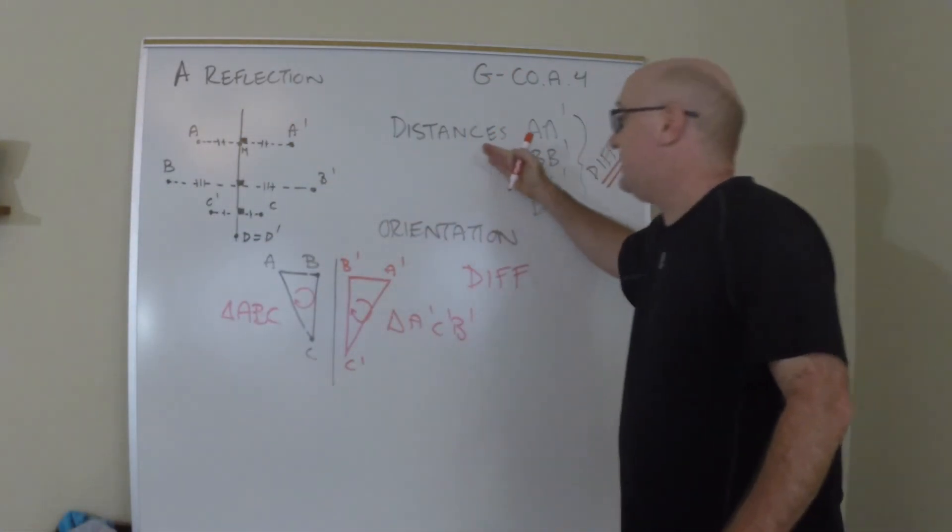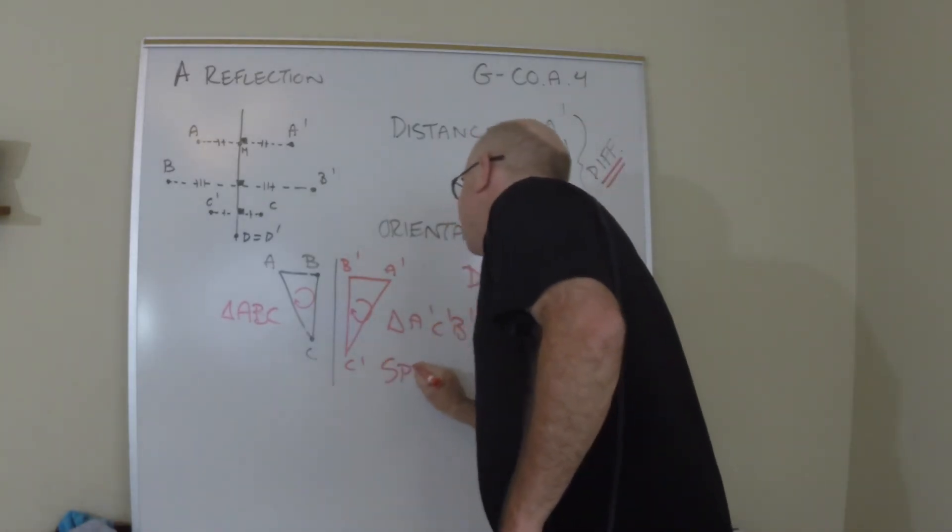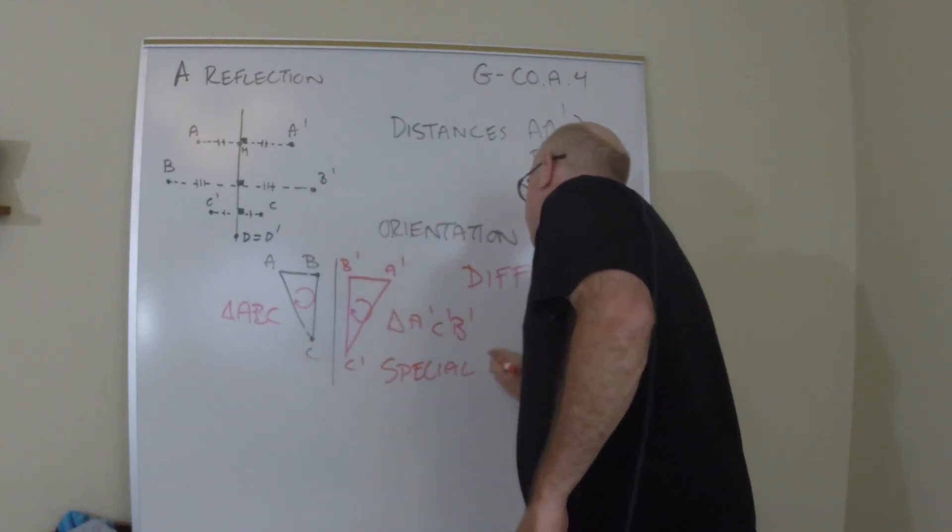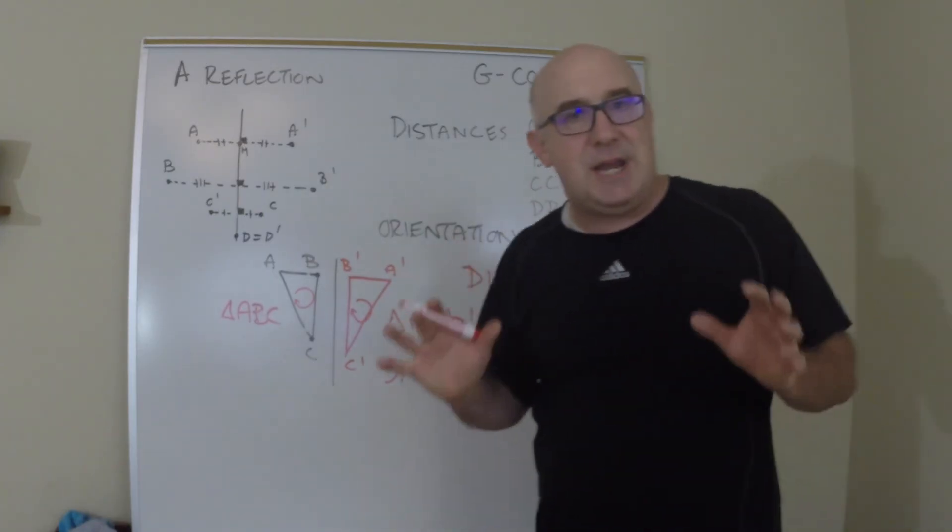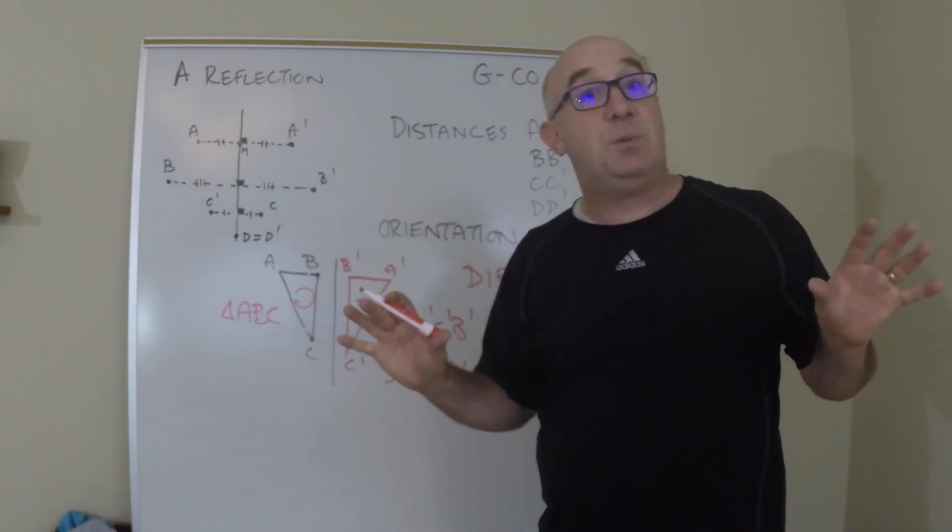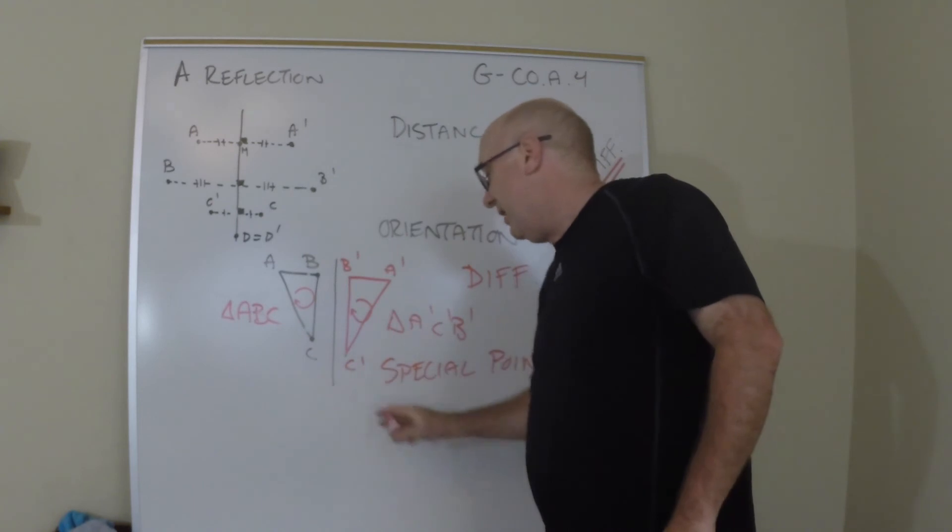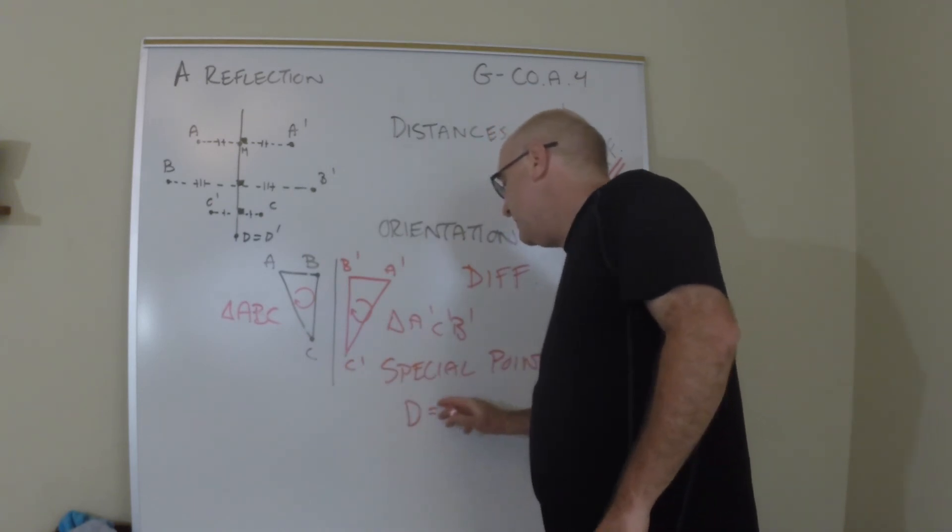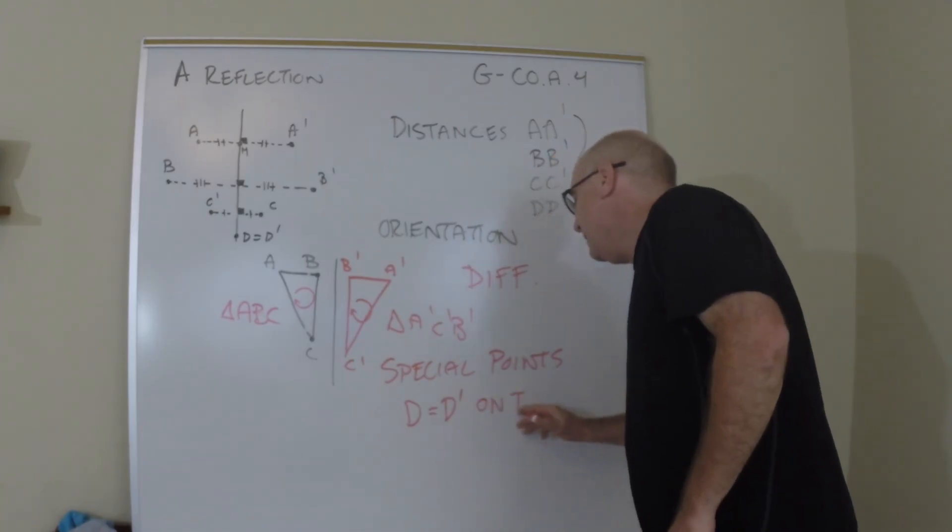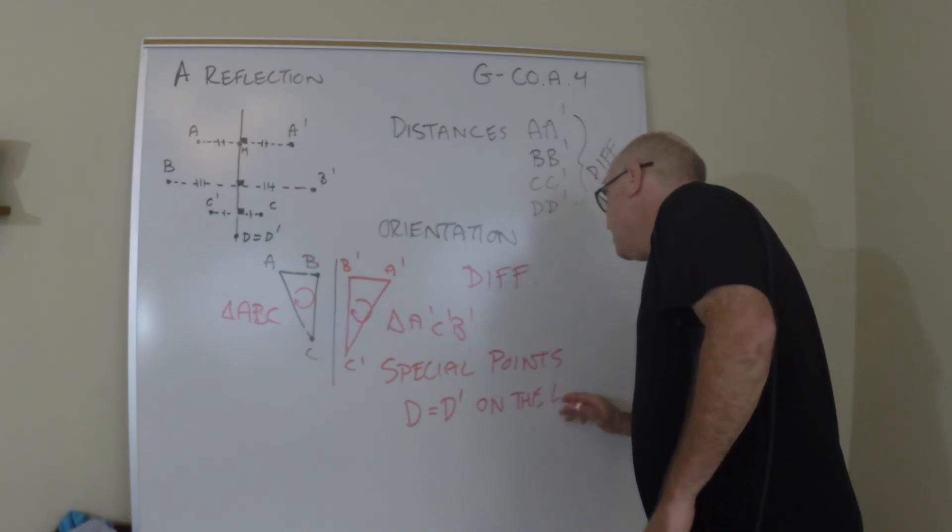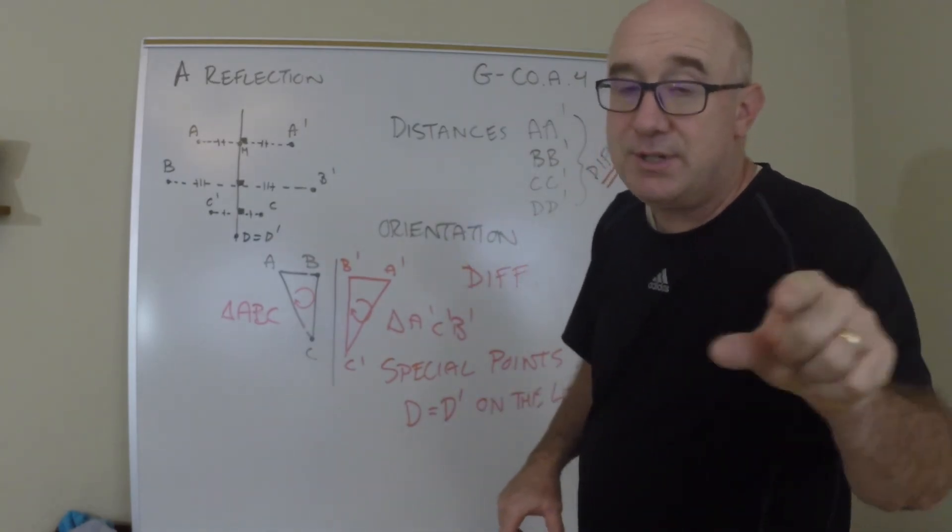So different distances, different orientation. And the last thing I want to talk about is special points. Are there anything special about locations in the plane when we reflect? And there is. If you are on the line of reflection, D maps to D prime if you're on the line. So it is possible to map to yourself.